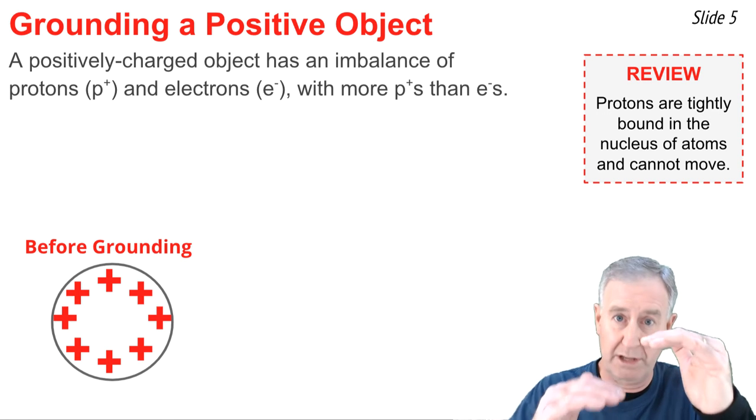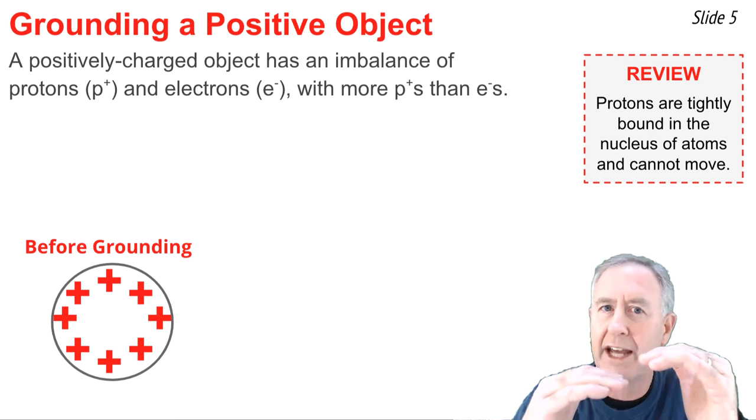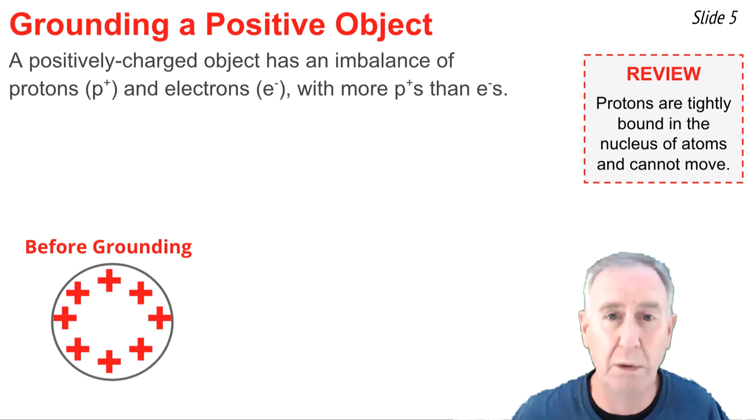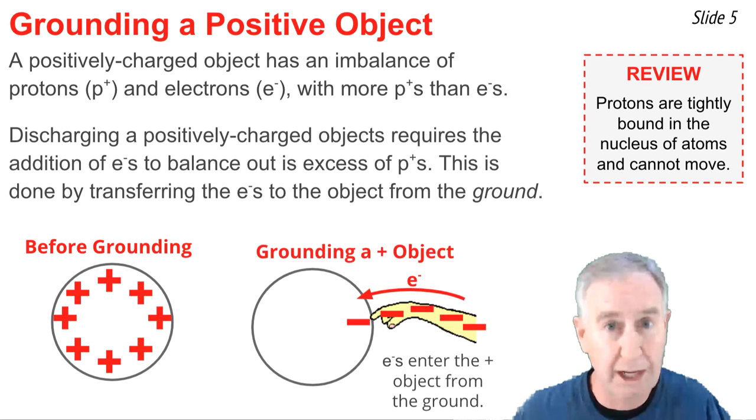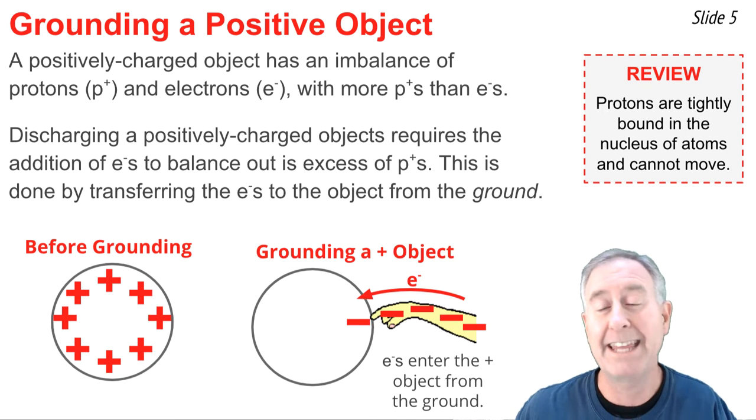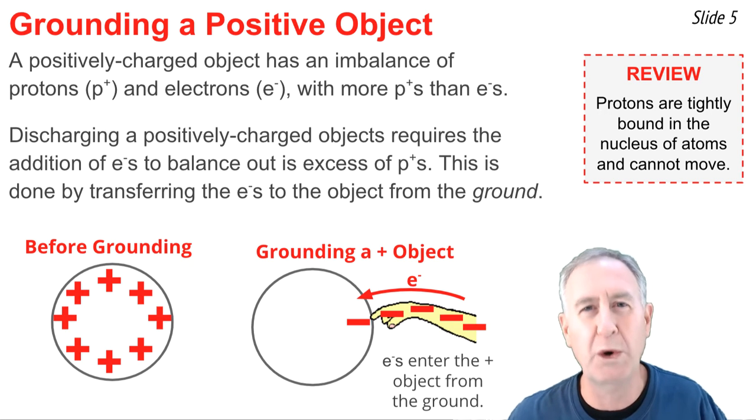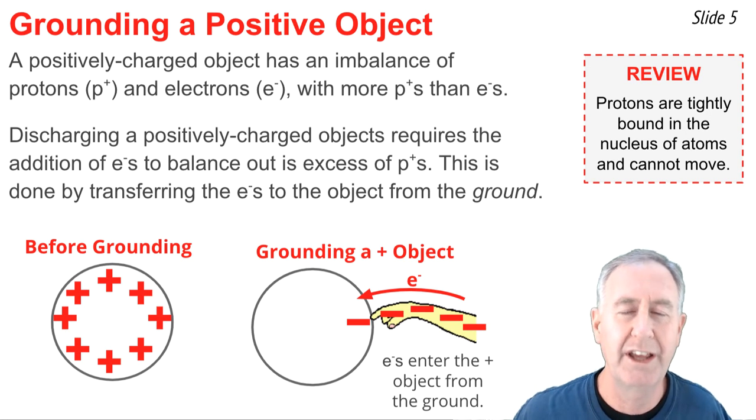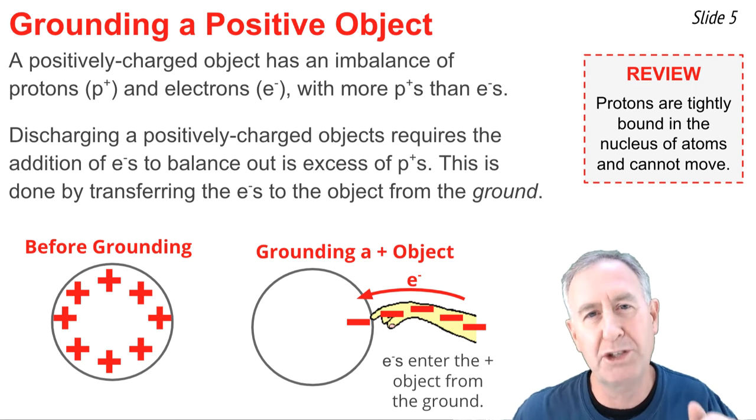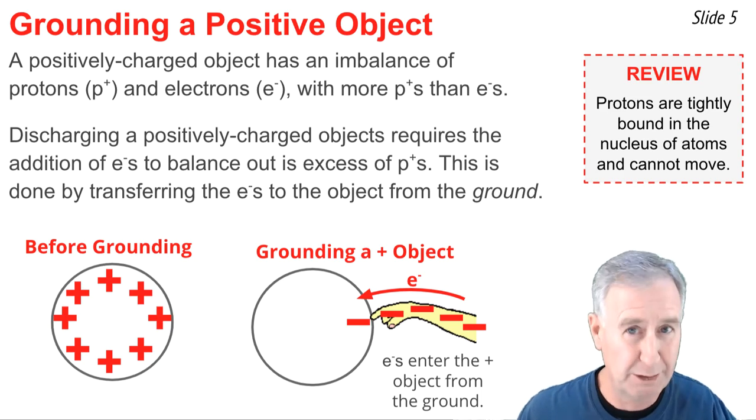So if you have more protons than electrons, the way you balance out the charge is you add electrons to that object until the numbers of protons and electrons are equal. For example, this is done by transferring electrons from the ground to the charged object. And they continue to transfer until finally you've balanced out the charge and there's no more excess positive charge. As mentioned, in a lab environment, a person is often the ground. And by touching that charged object, electrons can flow from ground to object.